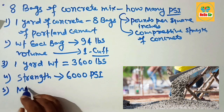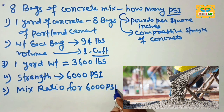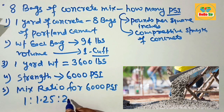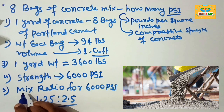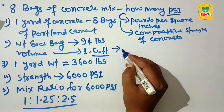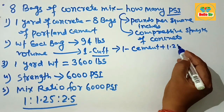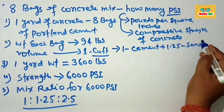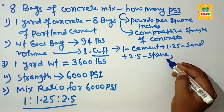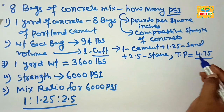The mix ratio for 6000 PSI concrete is about 1 : 1.25 : 2.5. This means 1 part cement mixed with 1.25 parts sand and 2.5 parts stone aggregate. Adding these together, the total proportion equals 4.75.